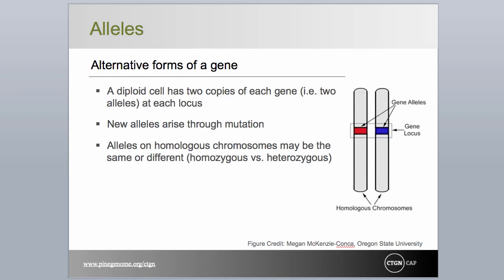Any diploid cell has two copies of each gene. If the copies are identical to one another, they are said to be homozygous. If they differ in sequence, they are said to be heterozygous. In a population of individuals, there may be many allelic forms of a given gene.